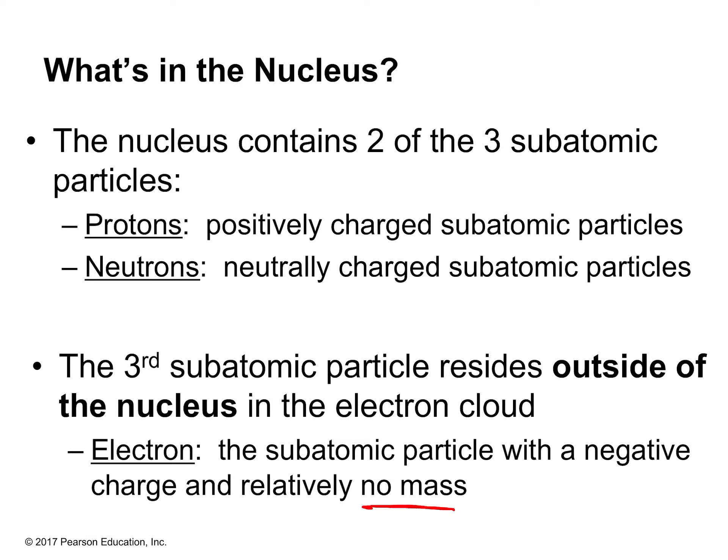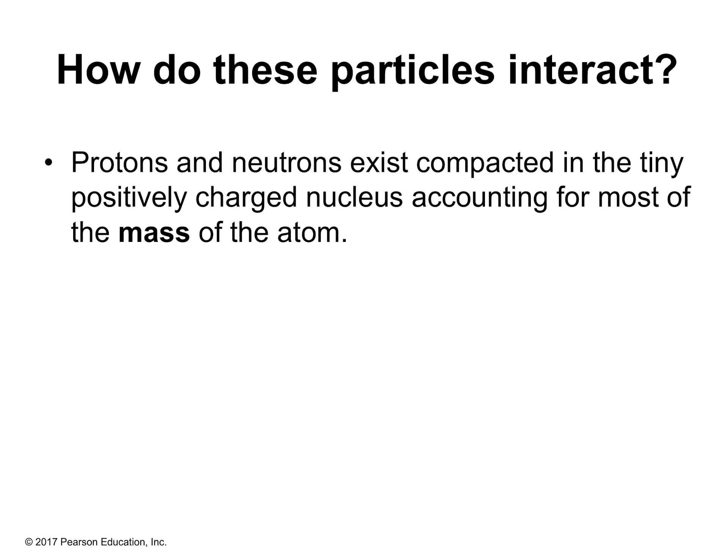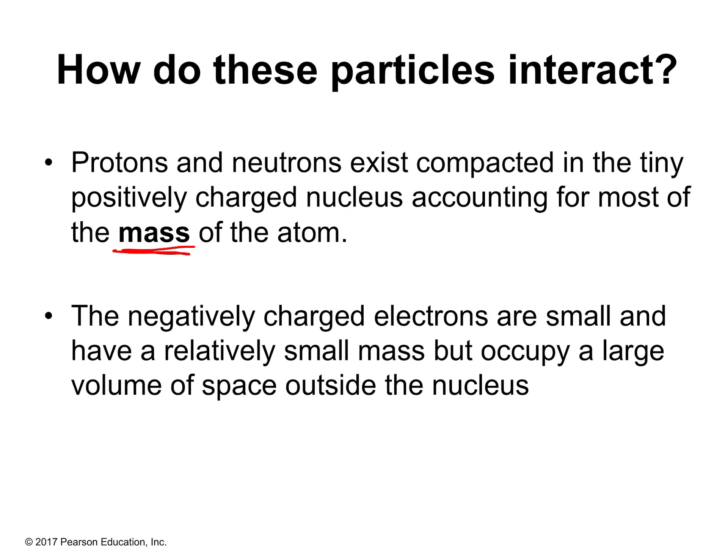You can think about electrons being like the hairs on your head. If you lost a couple of hairs, your mass isn't going to change — when you step on the scale, it will still say the same weight. That's why we treat electrons like they have no mass: if you gain them or lose them, the mass doesn't really change because they are so, so small. The protons and the neutrons exist in the tiny, compact, positively charged nucleus, which contains most of the mass of the atom.